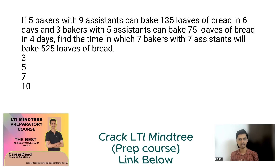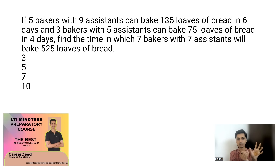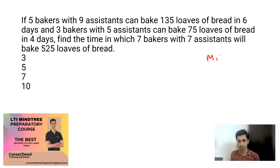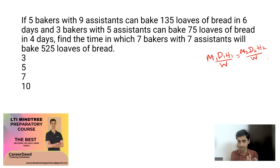We can call this a group efficiency question. We have a set of people working for a set of days to complete a set of work. For this kind of group efficiency question, we use the technique: M1 men working for D1 days working H1 hours to complete W1 units of work is equivalent to M2 men working for D2 days working H2 hours to complete W2 units of work.